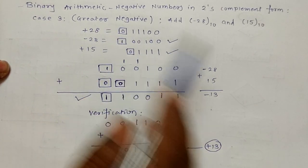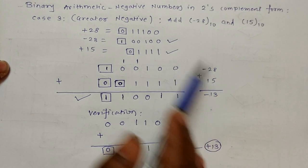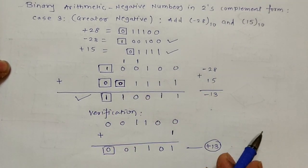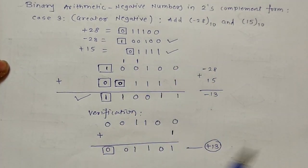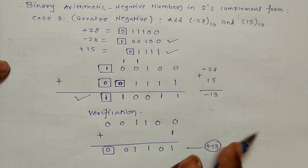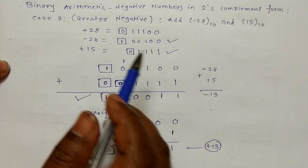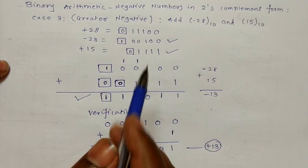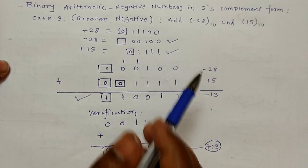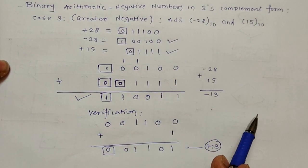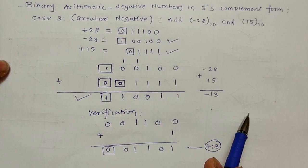So this is Case 3 — the greater number was negative and we took the addition of the two numbers to get minus 13. In Case 4, which we'll see in the next lecture, both numbers are negative. Thanks for watching this video.